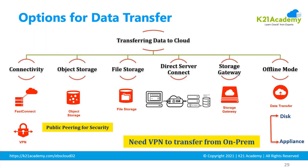For data transfer, depending on your choice and volume of data, you can transfer the database to the cloud via VPN — a secure connection from your on-premise data center to Oracle Cloud — transferring data over an encrypted channel using IPSec VPN protocol. Alternatively, you can use a dedicated private connection: Fast Connect, which gives you consistent bandwidth for migrating data.